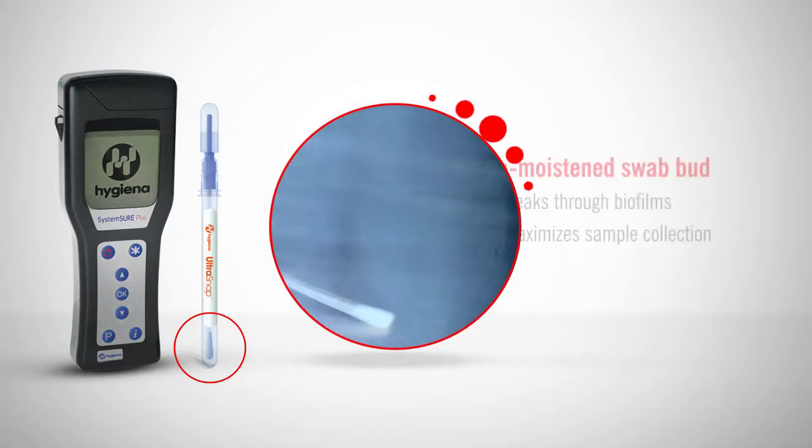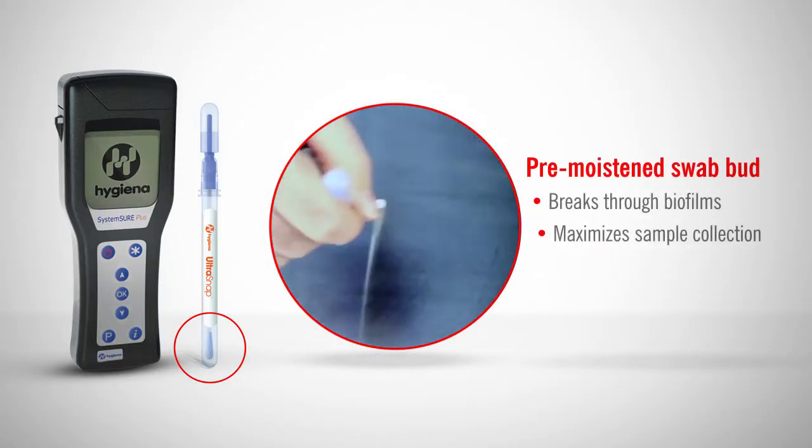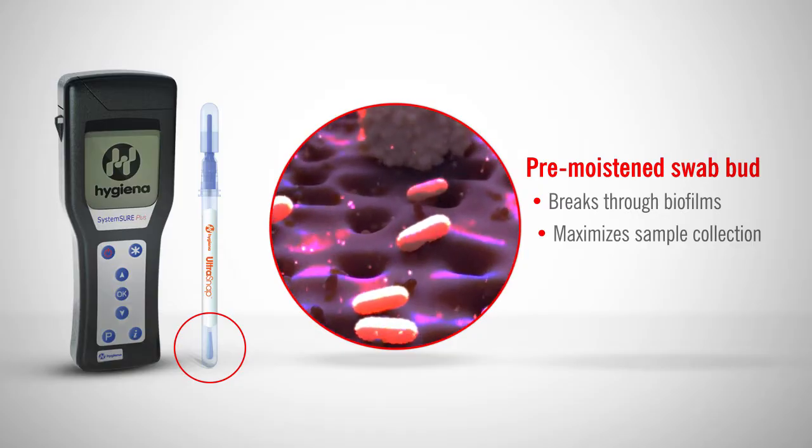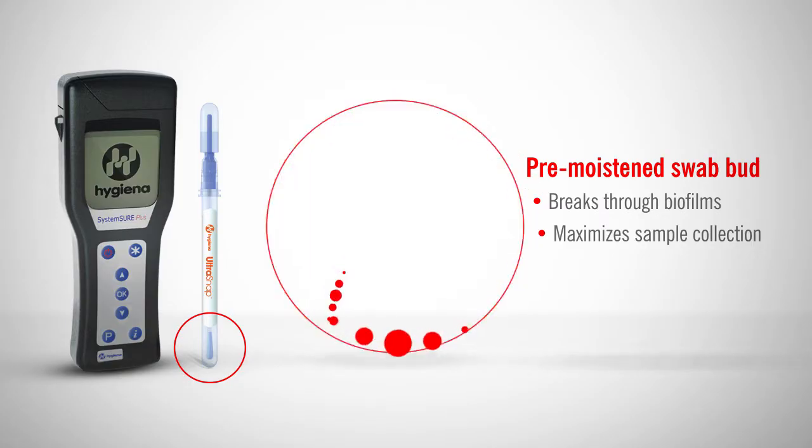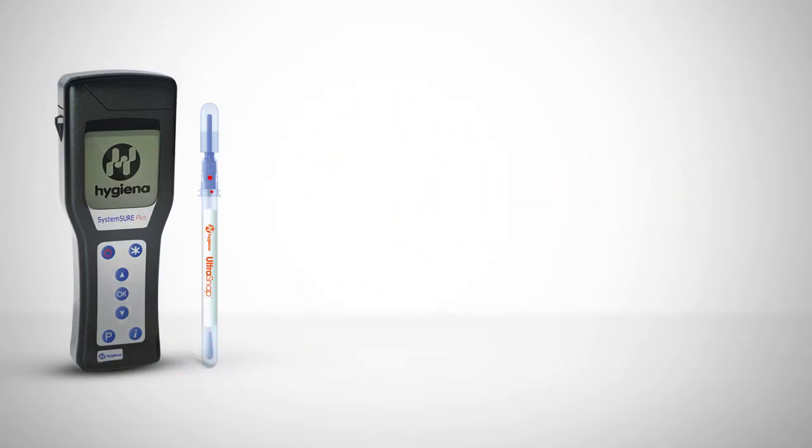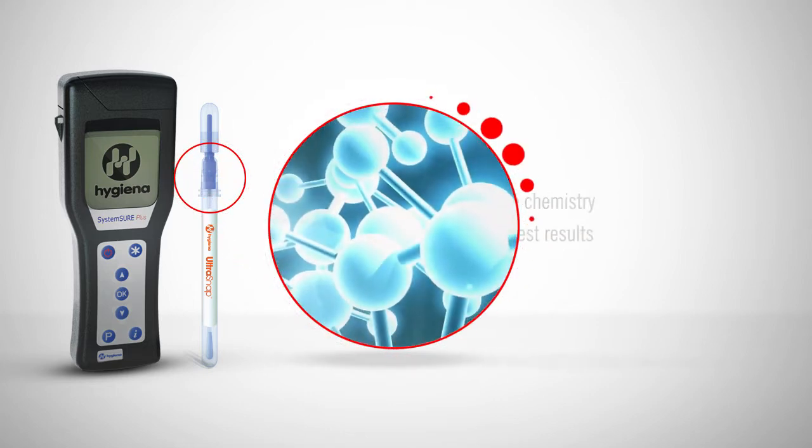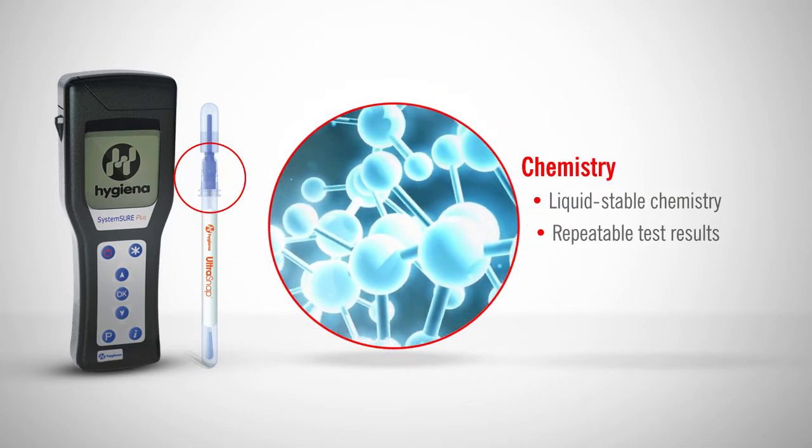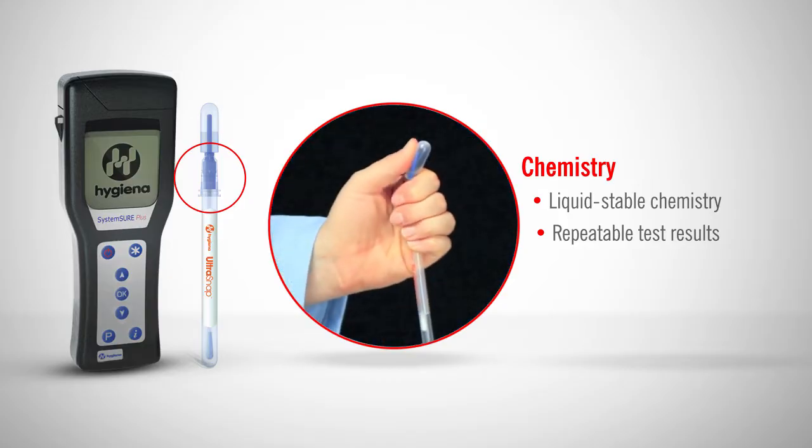Here are some important features about the system. The pre-moistened swab bud breaks through biofilms to maximize sample collection so you get the most accurate test results possible. And the liquid-stable chemistry with the patented SNAP Valve technology ensures users achieve repeatable results from test to test and user to user.